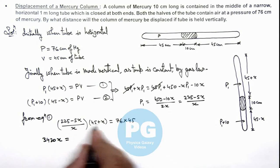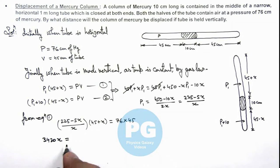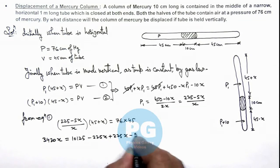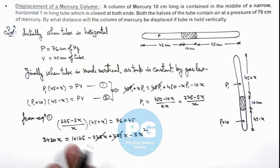When this left hand side we multiply, I am writing the left hand side on the other side, this 10125 minus 225 x plus 225 x minus 5 x square. So this 225 x also gets cancelled out. On simplifying this is a quadratic equation which is x square plus 684 x minus 2025 is equal to zero.